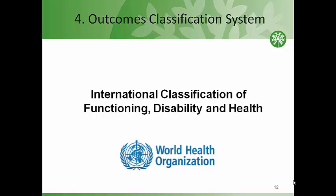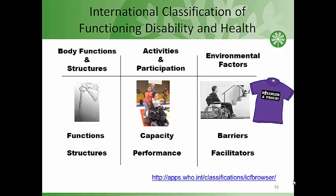We're moving to the next theme of this presentation: outcomes classification systems that can support our understanding of outcome measures. There are a variety of ways to classify patient outcomes, many developed to reflect the needs of specific disciplines. The most widely used system is the World Health Organization's International Classification of Functioning, Disability, and Health — the ICF — which we'll focus on in this module. The ICF distinguishes three broad categories of human performance: body function and structure, activities and participation, and environmental factors. There's an online browser that provides greater detail about the ICF; the URL is located on the bottom of this slide.